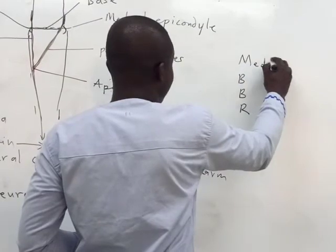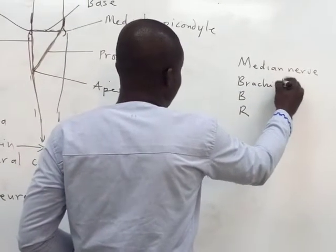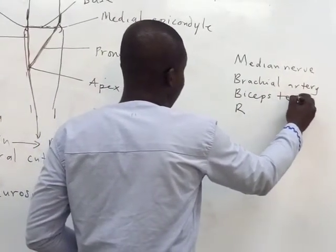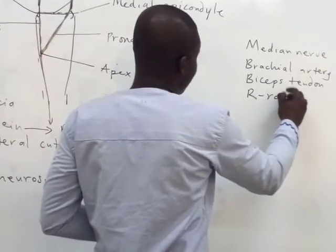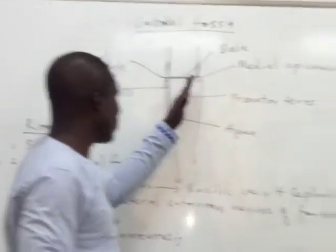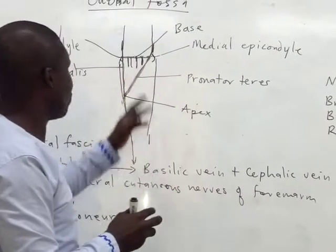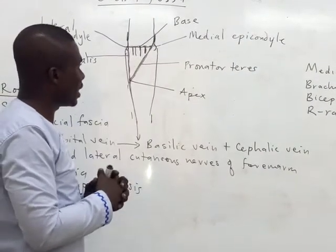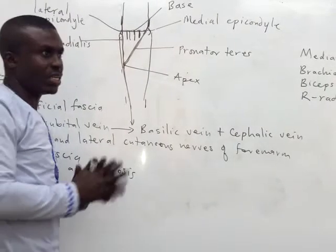M is for the median nerve. B is for the brachial artery. There is another B for the biceps tendon. And R is for the superficial branch of the radial nerve. So if you see cross-sections, the structures are identified from medial to lateral: median nerve, brachial artery, biceps tendon, and then the radial nerve — in that order, medial to lateral.